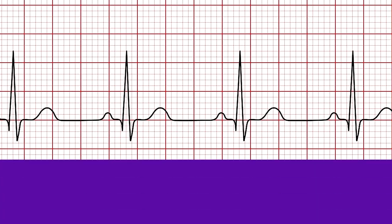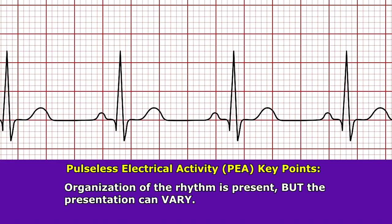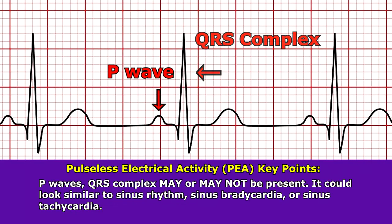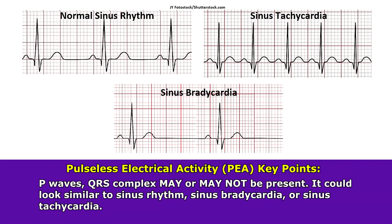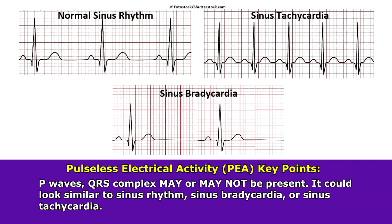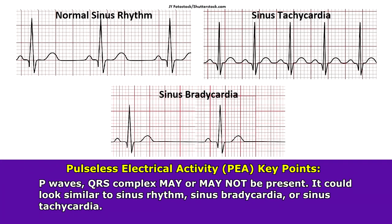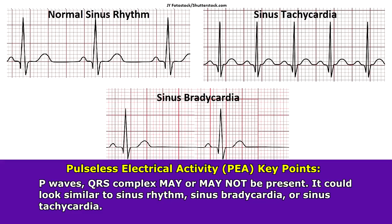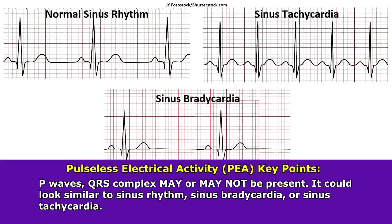PEA is a rhythm that whenever you look at the ECG, you will see organization to it. What you will see in terms of organization can vary on the ECG. You can see P waves with QRS complexes, which makes it look like normal sinus rhythm, sinus tach, or sinus bradycardia. This makes its appearance seem like a normal finding.